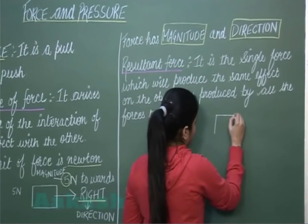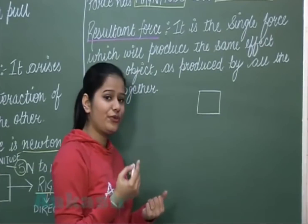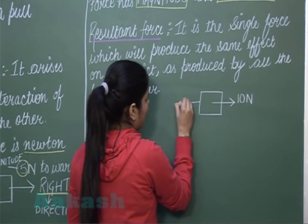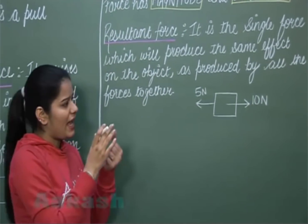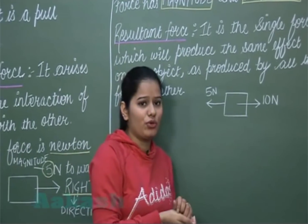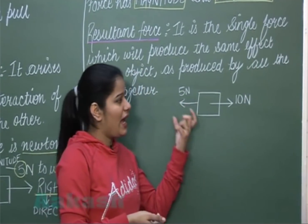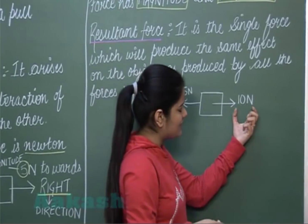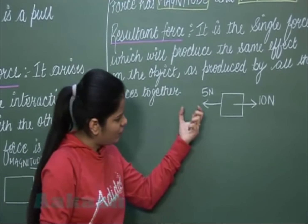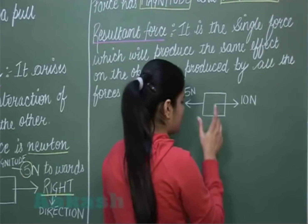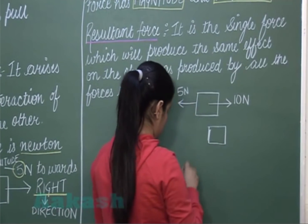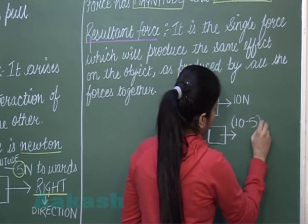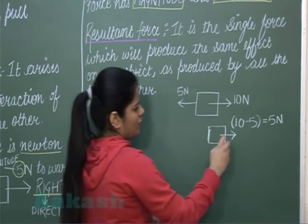If this is a block and two forces are acting on it — 10 Newton and 5 Newton — as the forces are acting in opposite directions, the net force will be the difference of these two forces. The direction of the net force will be towards the force with greater magnitude. Since 10 Newton is greater than 5 Newton, the net force is 10 minus 5, which is 5 Newton towards the right.